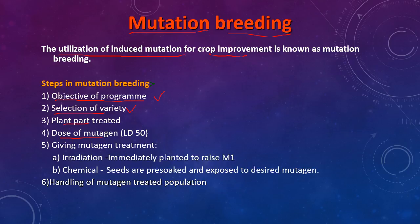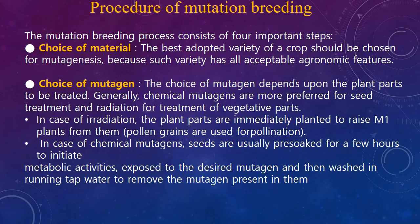Fifth, decide which mutagen is to be used — ionizing radiation or chemical agents. If plants are irradiated, they are immediately planted to give rise to M1; with chemical agents, seeds are pre-soaked and exposed to the desired mutagen. The sixth step is how to handle the mutagen-treated population. These six steps lead into the main mutation breeding procedure.